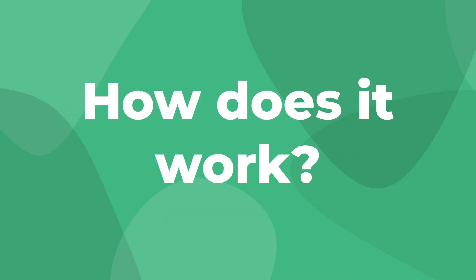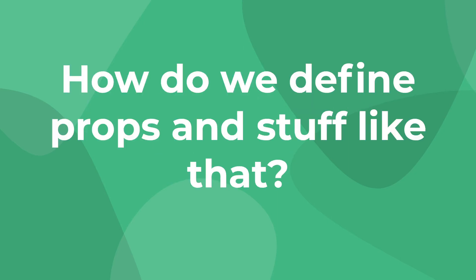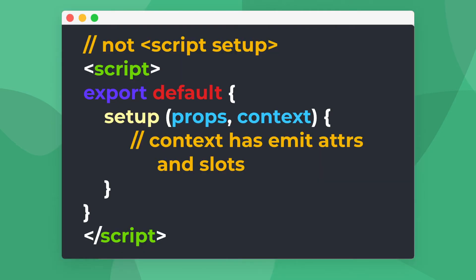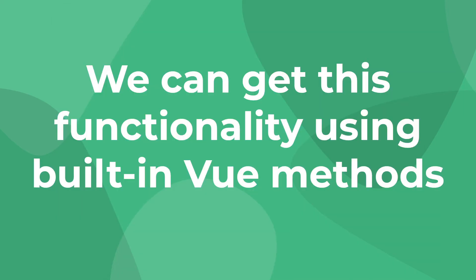Now that we know what script setup is, let's take a look at some of its more advanced features. First, you may be wondering how to do standard Vue operations like access and declare props, emit events, and access our context object. In the Composition API, these are simply arguments on our setup method. But in this script setup syntax, we can access these same options with three imports from Vue.